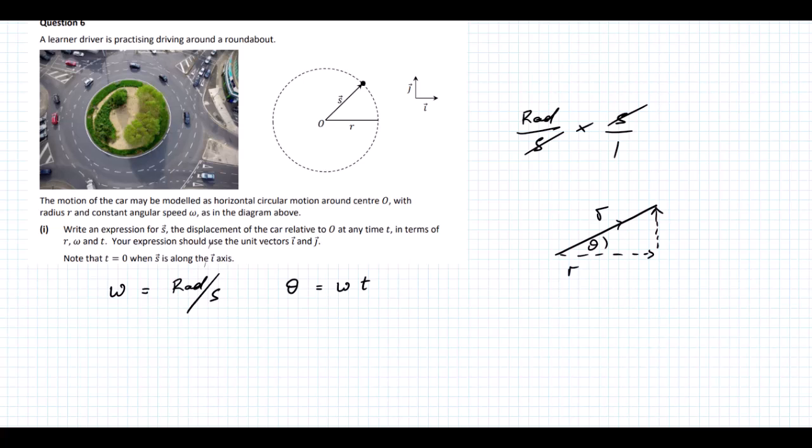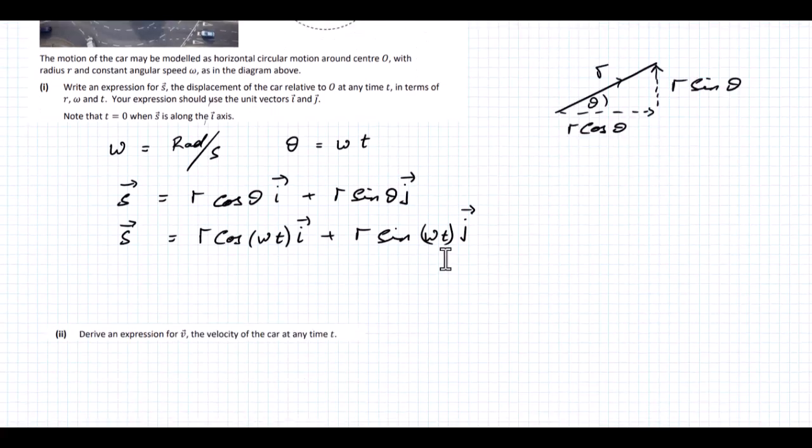Our displacement is going to be R cos theta in the i-direction, R sine theta in the j-direction. Since theta is omega times T, we can replace that. R cos omega times T in the i-direction plus R sine omega times T in the j-direction. And that's it.